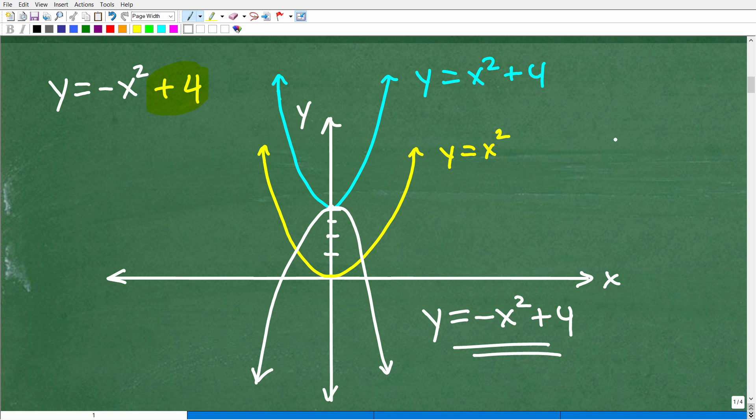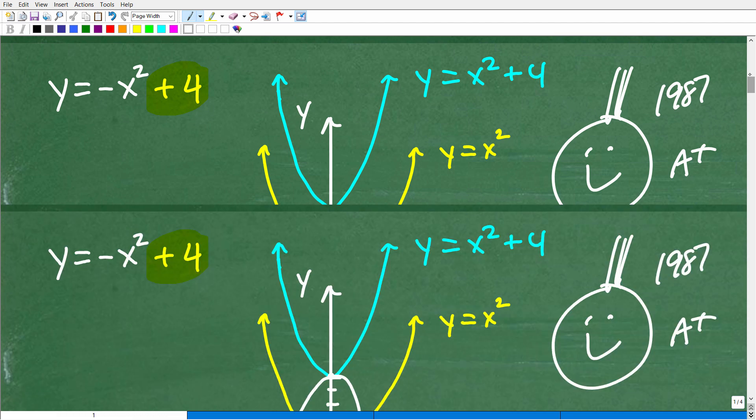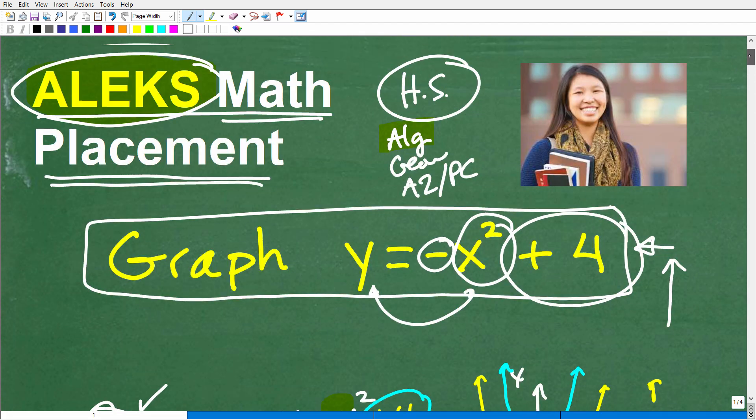If you got that right, I must reward you with a nice happy face with a good old 1987 Mohawk, an A+. That's a good indication that you're on board with some basic algebra. If you didn't get this right, that's probably a good indication you have a lot of work to do reviewing algebra. But if you did get this right, don't be overconfident because there's a lot more math on the ALEKS placement test than this. This is a fairly basic problem.